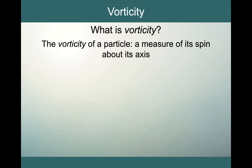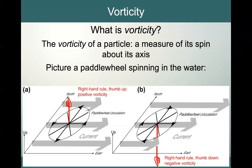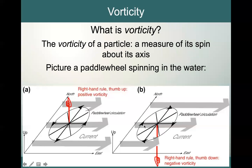If you take a paddle wheel and drop it in a current, the current would move it along. But if the current isn't the same at both sides — moving faster at one side than the other — it would actually cause it to spin. In figure A, we have an entirely zonal current going from west to east. It is stronger at the southern end than at the northern end. So if we drop the paddle wheel in, this part will go faster and this part slower, and it will have a spin — the paddle wheel will start to spin.